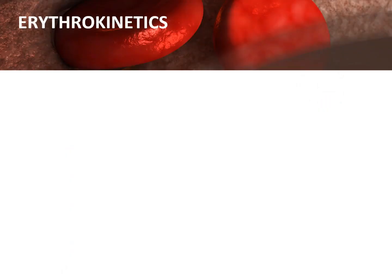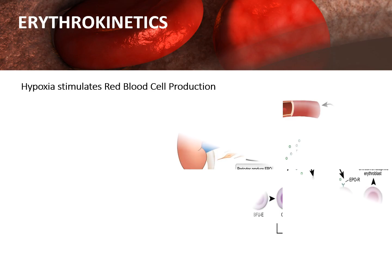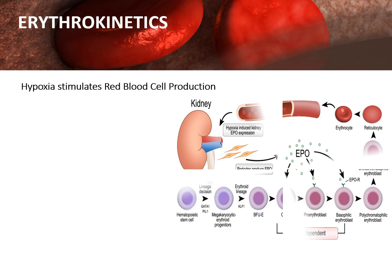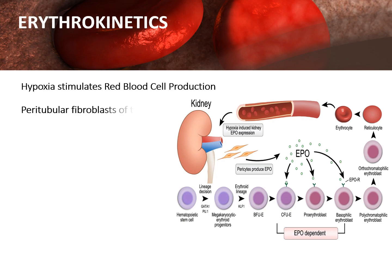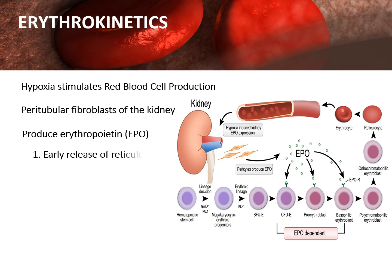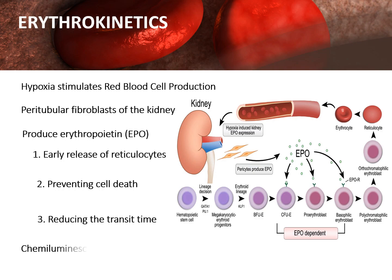Erythrokinetics: hypoxia, which means too little tissue oxygen, stimulates red blood cell production. To regulate the production of RBCs, the body requires a mechanism to detect whether adequate oxygen is being carried to the tissues. The primary oxygen-sensing system of the body is located in the peritubular fibroblasts of the kidney, which produce erythropoietin. When hypoxia is detected, erythropoietin — the major stimulatory cytokine for red blood cells — is produced. Erythropoietin has three major effects: (1) allowing early release of reticulocytes from the bone marrow, (2) preventing apoptotic cell death, and (3) reducing the time it takes for cells to mature in the bone marrow. Quantitative measurements of erythropoietin are performed on plasma and other body fluids by chemiluminescence, with a reference interval of 4 to 27 mU per liter.